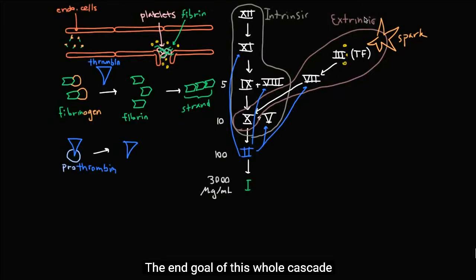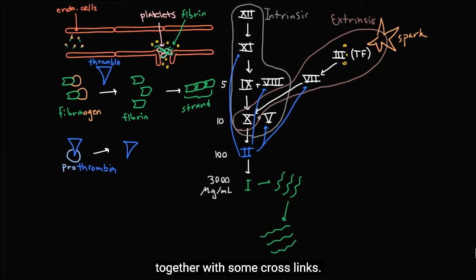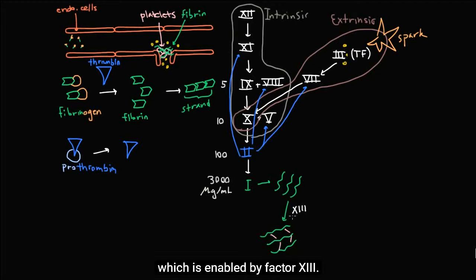The end goal of this whole cascade is to get these fibrin molecules. And these fibrin molecules together will form some strands. But it actually turns out that there's one more step, which is to connect these strands together. And so we're going to want to connect these strands together with some cross-links. These cross-links will just hold them together so that they actually form a tight mesh. And it turns out that it's this step right here which is enabled by factor 13.